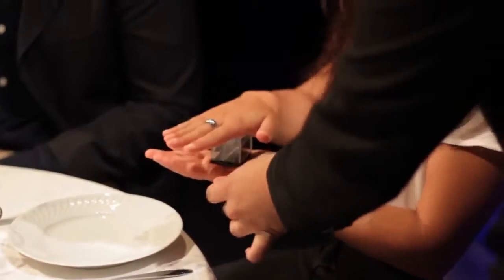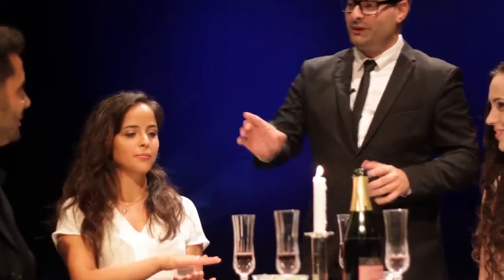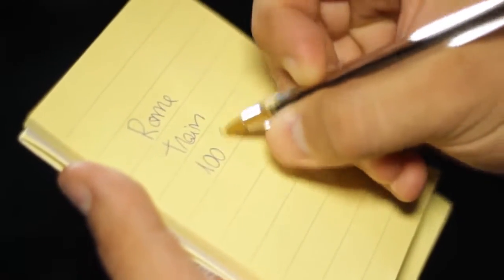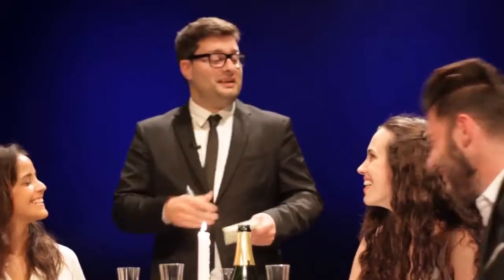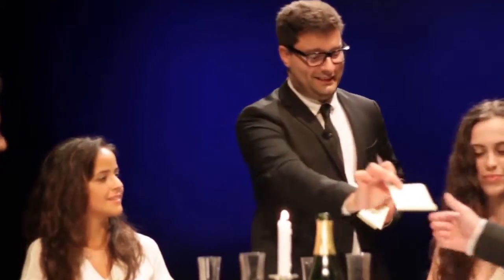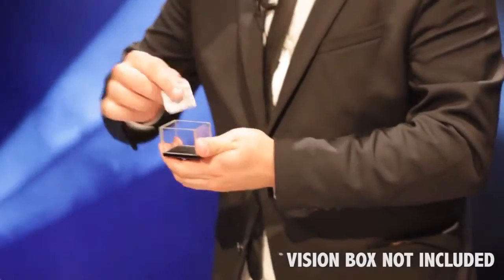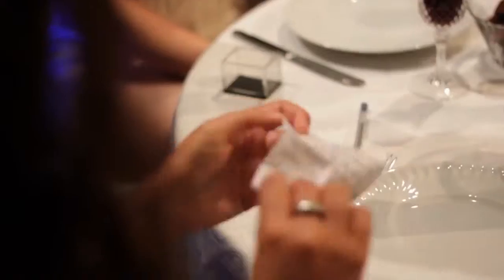The magician shows a prediction that stays in full view since the beginning. The spectators are then asked to create a dream vacation. They freely name any city, any transport, and any amount of money. The magician writes it down on a small post-it pad, very clearly and without any cover. At the end, the magician shows that his prediction is a hundred percent correct.